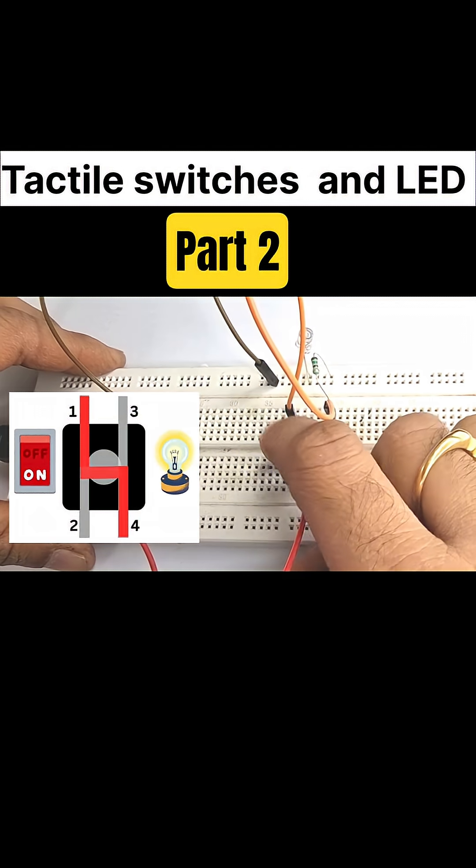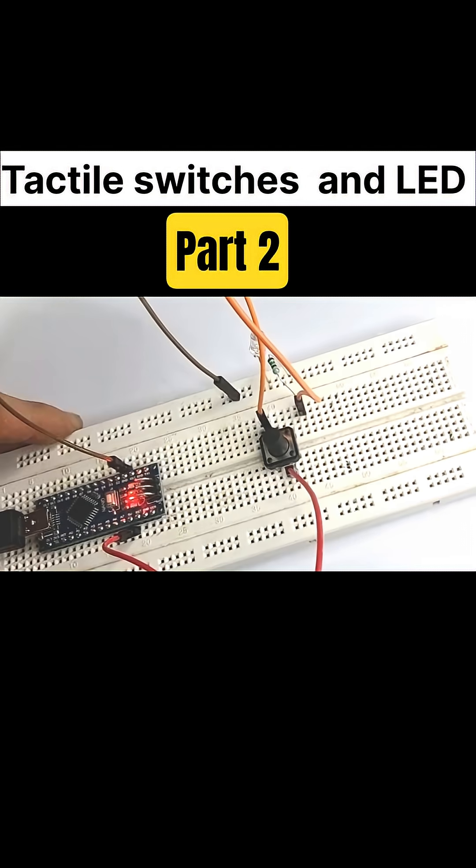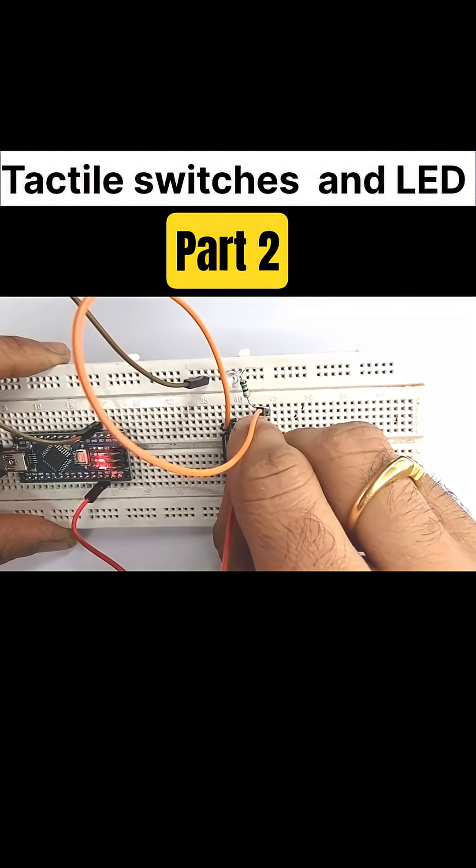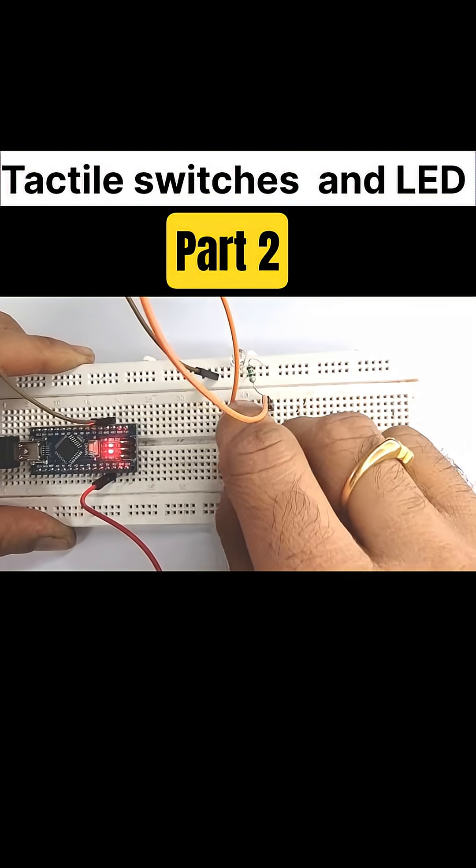Now the switch works properly and controls the LED on and off. I shifted the jumper wire to pins 1 and 3. This also works perfectly. The LED is still controlled when I press the button.